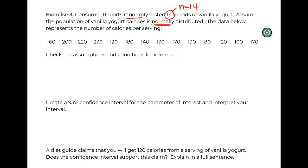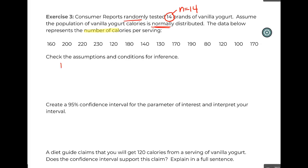The data below represents the number of calories per serving. As I said before, number of calories—we're dealing with something quantitative, right? We're going to check our conditions for inference. If we're doing inference with a quantitative measure, even if we weren't, it's basically those three things: independence, SRS, and less than 10 percent of the population.